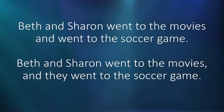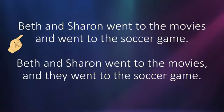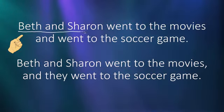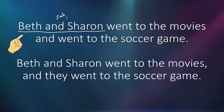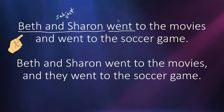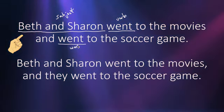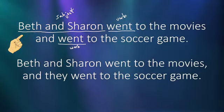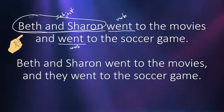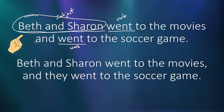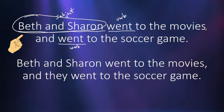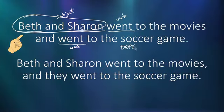Here we have two sentences that are nearly identical, but they're different in a very important way. In our first sentence, we have Beth and Sharon — that's our subject — and what did they do? They went — that's our verb — to the movies, and went — that's our other verb — to the soccer game. Now, Beth and Sharon is the only subject that we have. So, 'went to the movies and went to the soccer game' share that subject, Beth and Sharon. Because of that, we do not put a comma in front of the word 'and.' It's called a dependent clause — dependent on the subject.